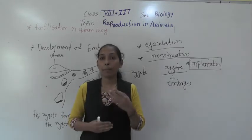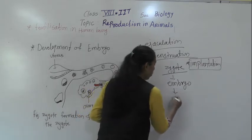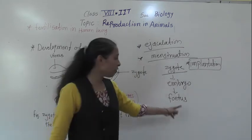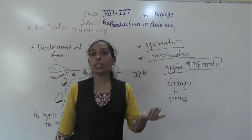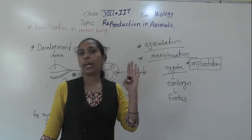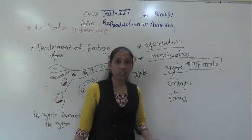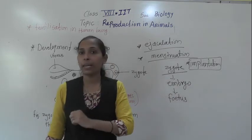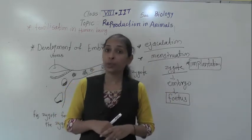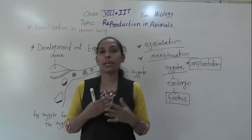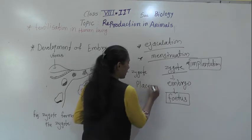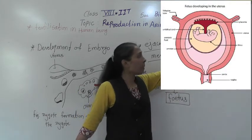The stage of the embryo in which the different body parts are identifiable is called the fetus. At that stage the embryo has very well-defined body parts. The fetus is attached to the uterus with the help of a special structure called the placenta.